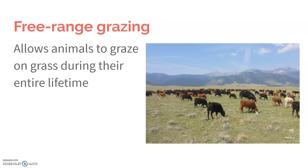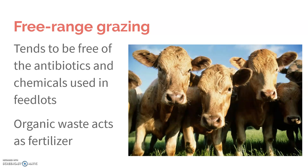The alternative to CAFOs is free-range grazing, which allows animals to graze on grass during their entire lifetime. There are different levels of free-range certification reflected in the label on your meat — things like 'certified humane' with level one, two, and three types. These animals tend to be free of the antibiotics and chemicals used in feedlots. The organic waste acts as a fertilizer for the grass, which then grows and is used as a food source.